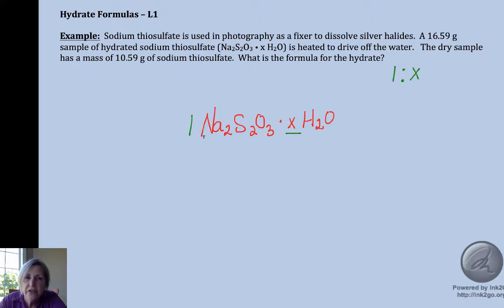So that means we need to find moles of our sodium thiosulfate and we need to find moles of water so that we can divide by the smallest to get a whole number mole ratio.